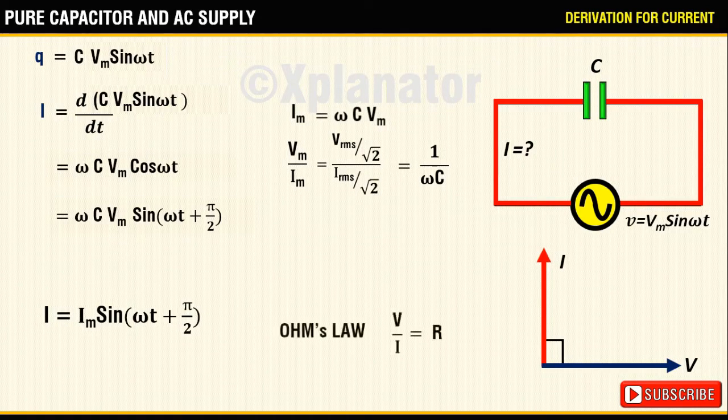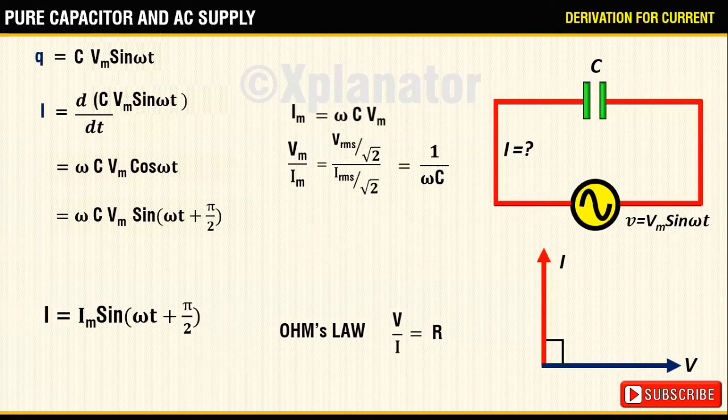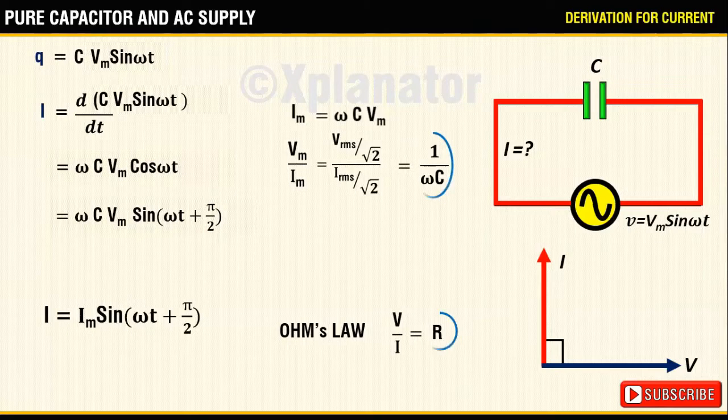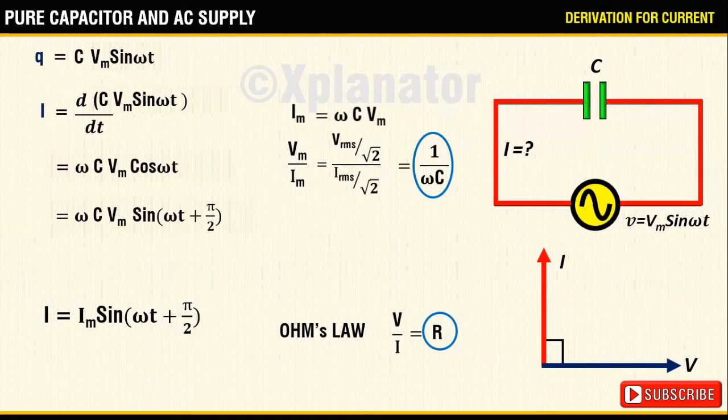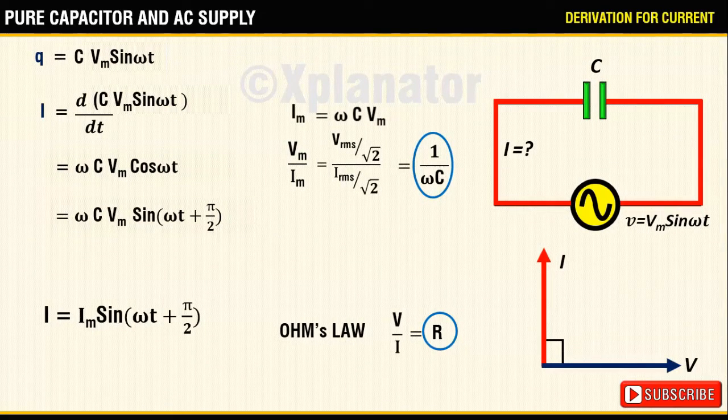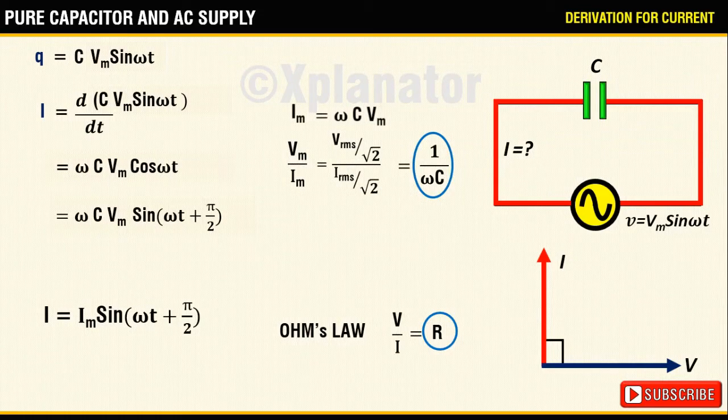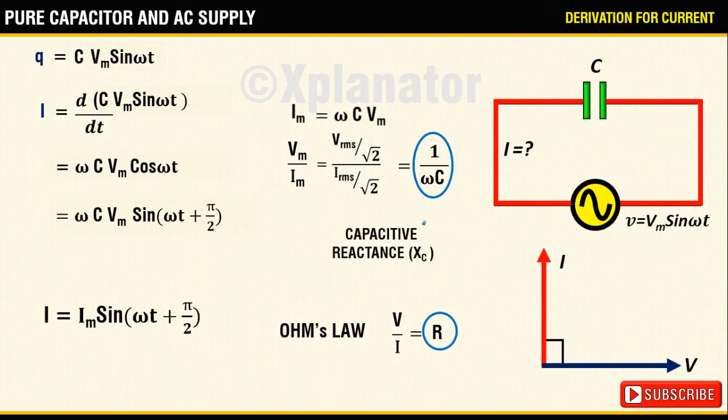Comparing it with the equation for Ohm's law, you see that R in this case equals 1 upon omega C, which means this is the opposition which is offered to the flow of AC current and we name this term 1 upon omega C as capacitive reactance.